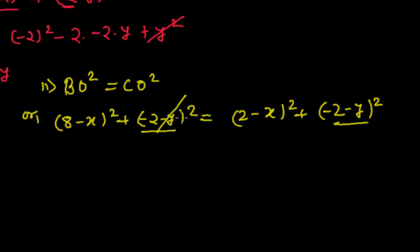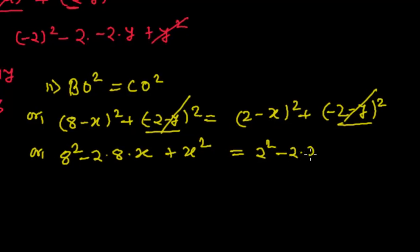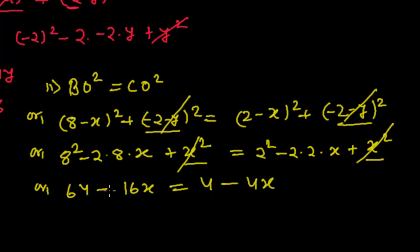Expanding using (a - b)² = a² - 2ab + b²: the left side gives 8² - 2(8)x = 64 - 16x, and the right side gives 2² - 2(2)x = 4 - 4x. The x² terms cancel from both sides.